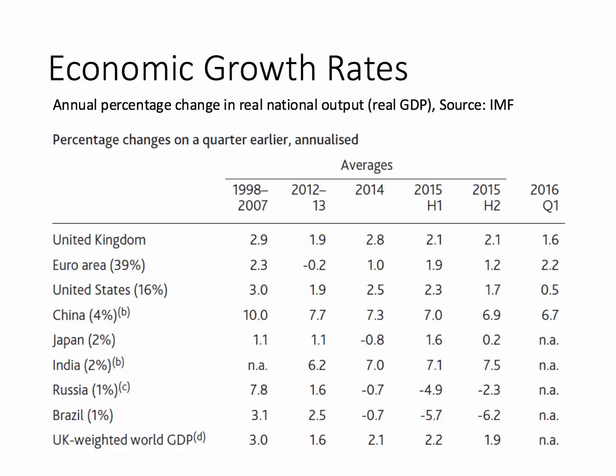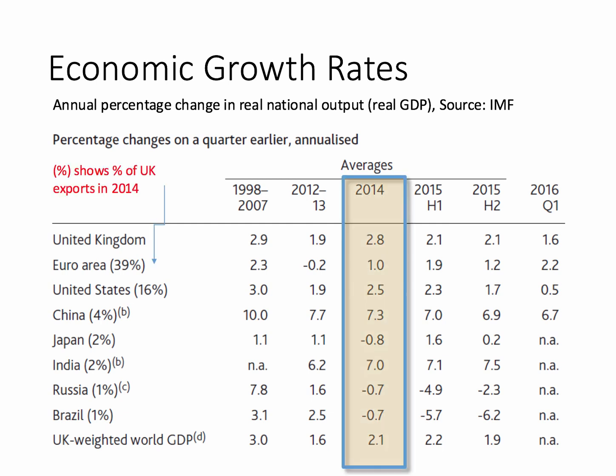Growth rates matter — the growth rates of other countries really do matter, and this is an external influence. The stuff in brackets here is the share of UK exports to various countries: for example, 4% of our exports go to China, only 2% to India, about 40% to the euro area. The key thing is to think about growth: growth is slowing down in countries like China and is pretty weak already in the euro area, so a slowdown in those regions would be an external influence on the British economy.